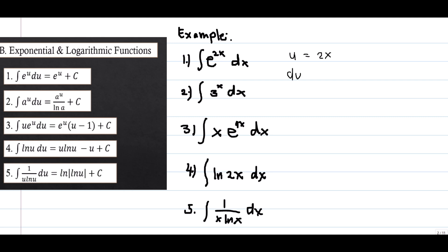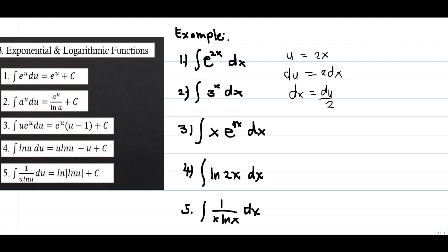Let u = 2x. To find du, we take the derivative of u: du = 2 dx. So we can obtain dx = du/2.